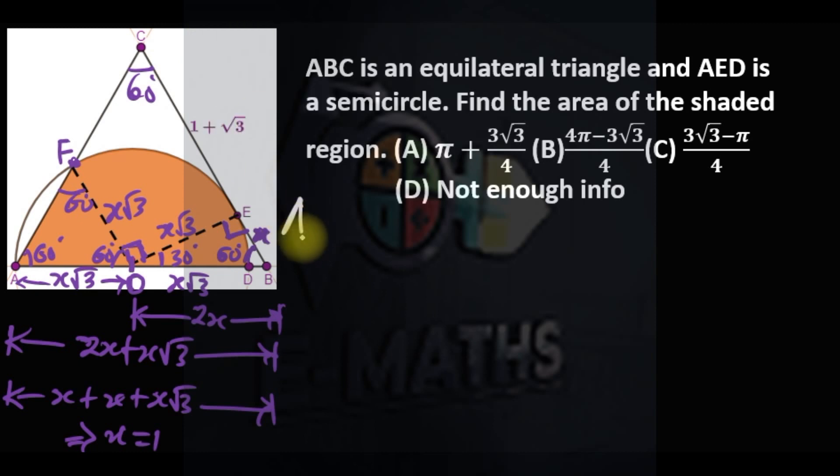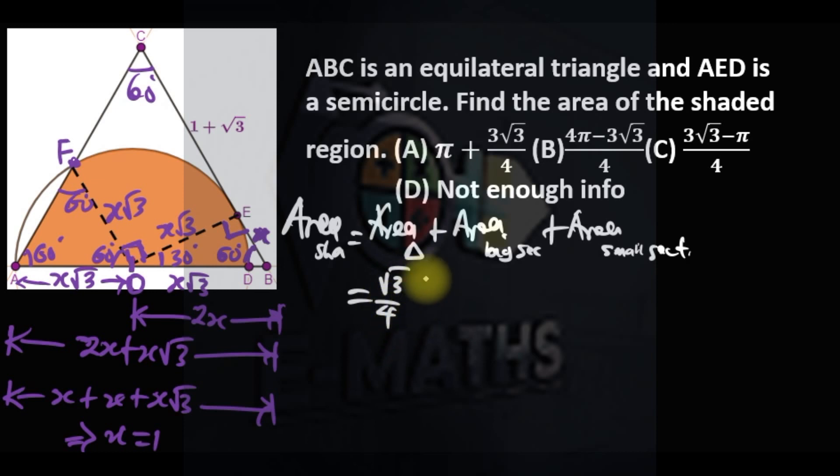To find the area now, the area of the shaded region is the area of the triangle plus area of the big sector plus area of the small sector. This is an equilateral triangle, so we have the special formula: root 3 over 4 times the side squared. The side is, remember our x is 1, so 1 plus root 3 squared.